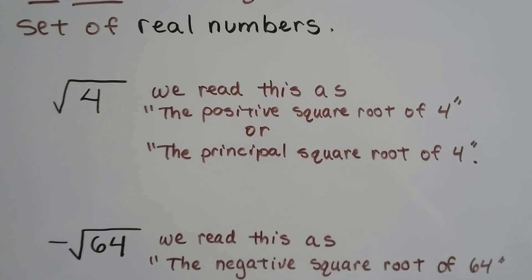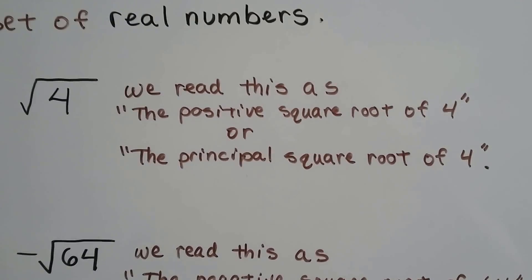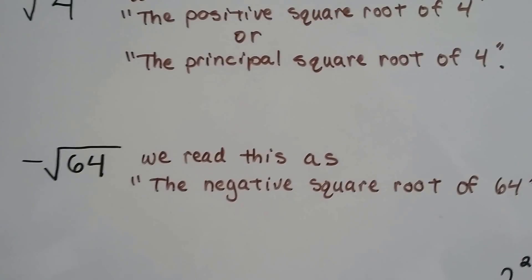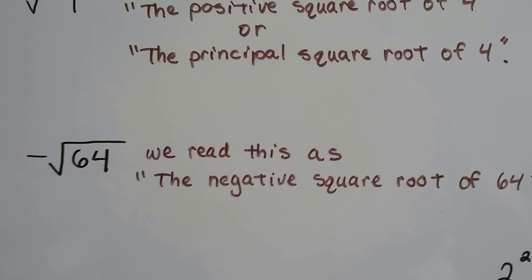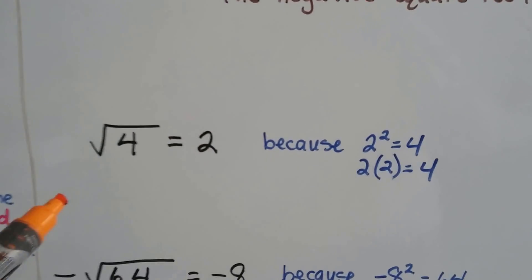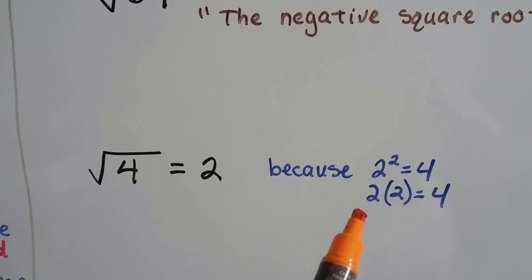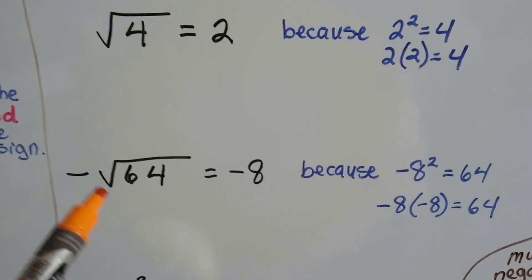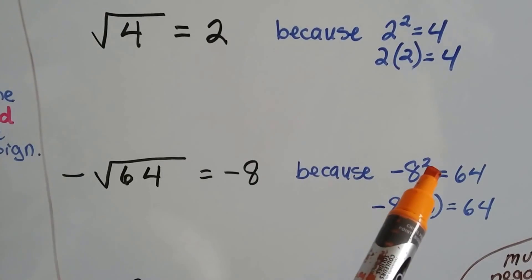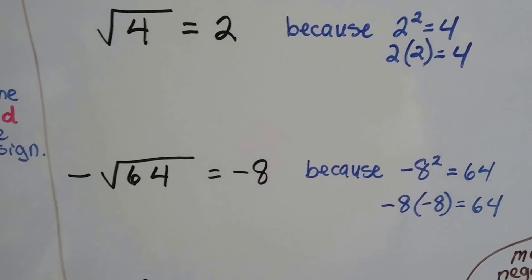When we see a 4 as the radicand underneath the radical symbol, we read this as the positive square root of 4, or the principal square root of 4. When we see the minus sign in front of it, we read this as the negative square root of 64. The square root of 4 is 2, because 2 to the second power is 4 — 2 times 2 is 4. And the negative square root of 64 is negative 8, because negative 8 times negative 8 equals 64.